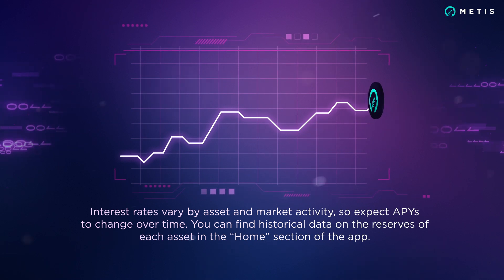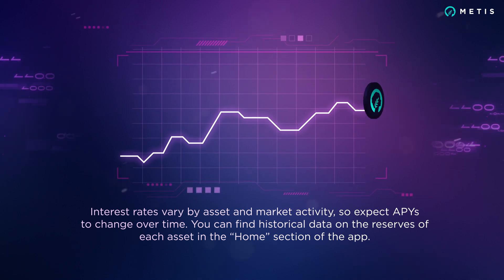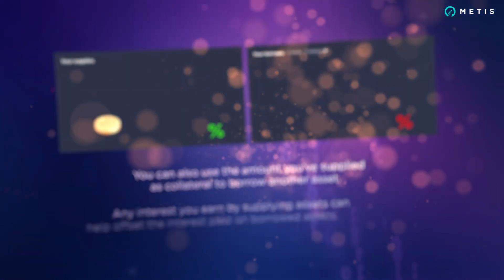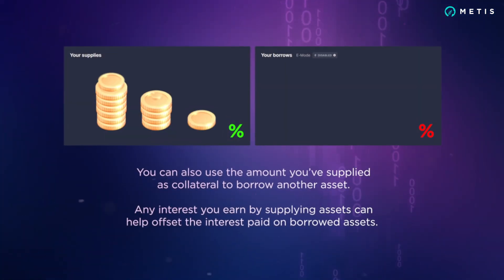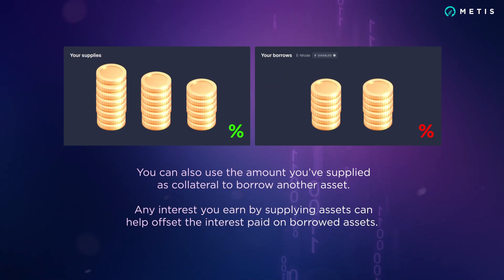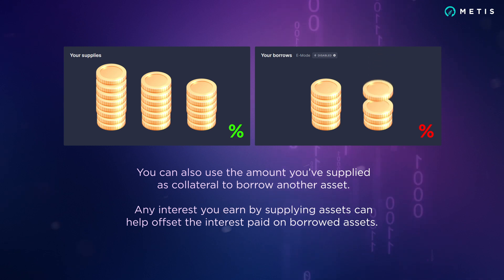You can find historical data on the reserves of each asset in the Home section of the app. You can also use the amount you've supplied as collateral to borrow another asset. Any interest you earn by supplying assets can help offset the interest paid on borrowed assets.